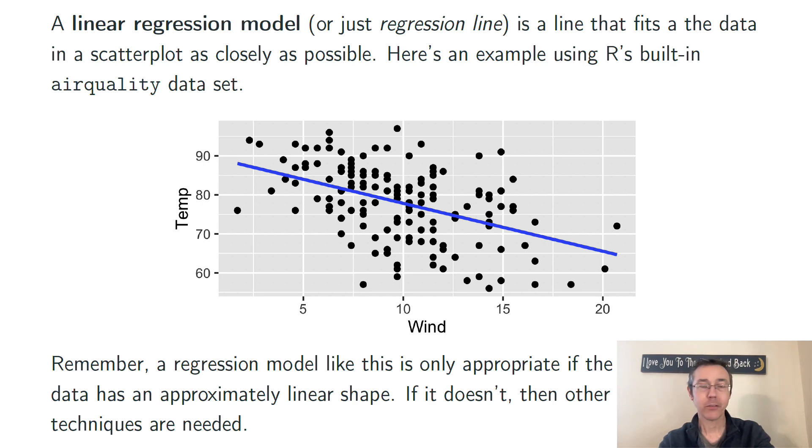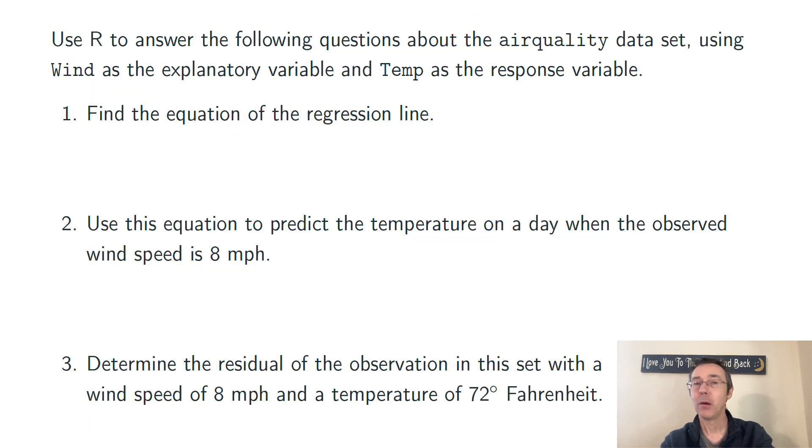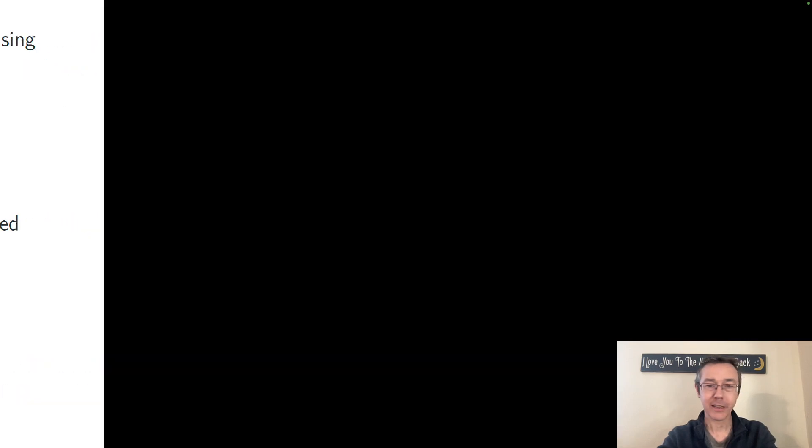Okay, so over the next couple minutes, I want to answer some basic questions about this data set and these two variables. I want to get the equation of the regression line we were just seeing in that picture. I'd like to make a prediction using that regression line for the temperature on a future day when the observed wind speed is 8 miles per hour. And then I'd like to get a residual for an observation with that wind speed and a temperature of 72 degrees Fahrenheit. Yeah, these measurements are in miles per hour and Fahrenheit. I'm in the United States. My apologies to my international audience. Okay, so let's swap over to R and get this done.